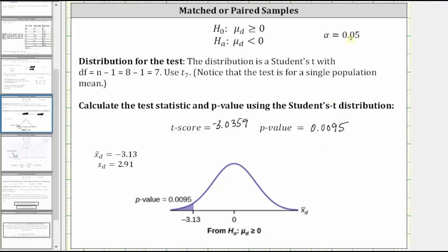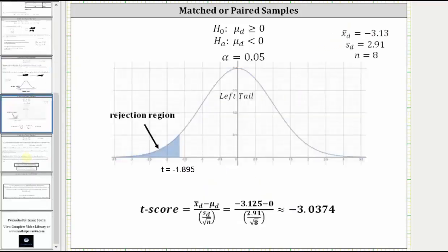Before we compare the p-value to alpha and draw a conclusion, let's take a closer look at this t-score. If we were doing this by hand, we would take alpha equals 0.05, recognize that we have a left-tailed test, and determine the corresponding t-score shown here as negative 1.895.